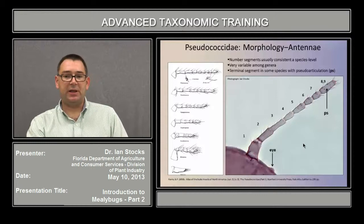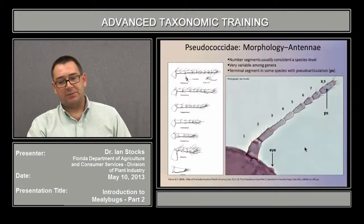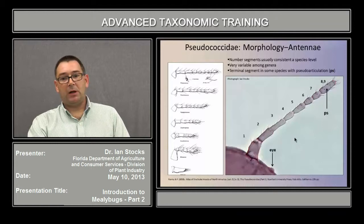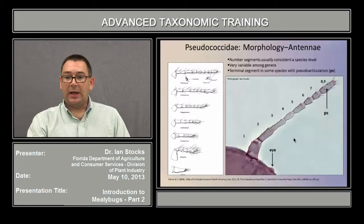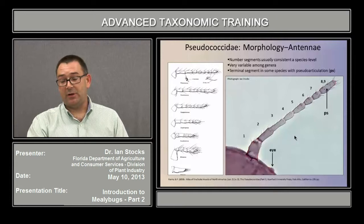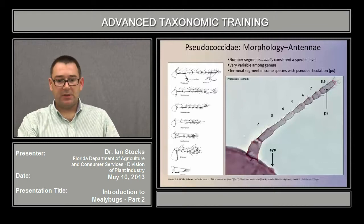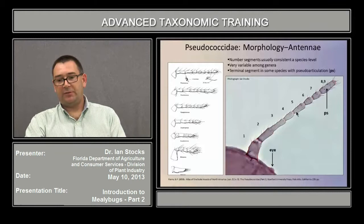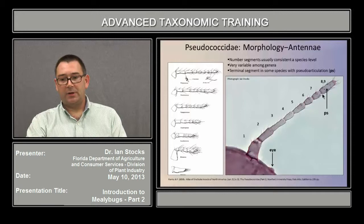The number of antennal segments is usually consistent at the species level, though this is not always the case. There's population-level variation, sometimes they can be damaged, and you might be missing a segment. But it is very variable amongst genera. So you take a genus that has characteristically eight antennal segments for most species — there may be a species in that genus that has only seven, or one that typically has nine segments may have species with only eight. We count from the first segment: one, two, three, four, five, six, seven — all well demarked from one another.